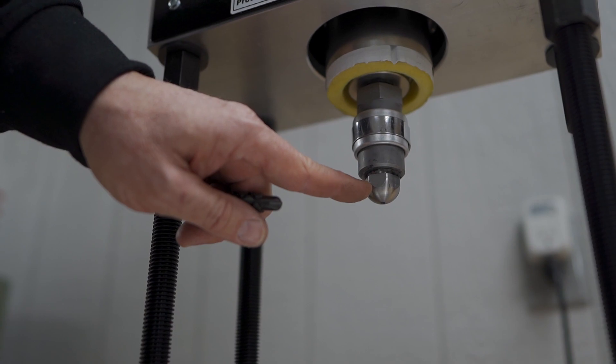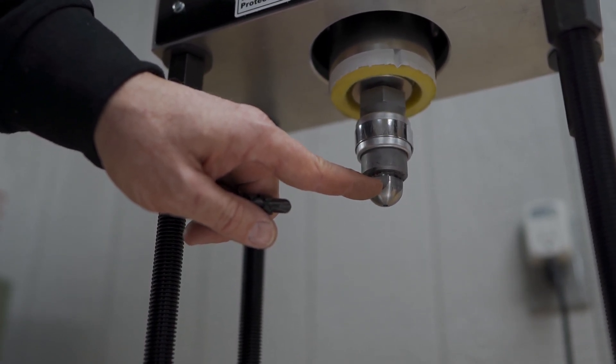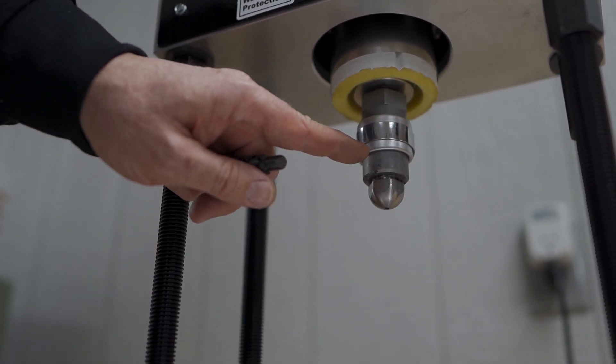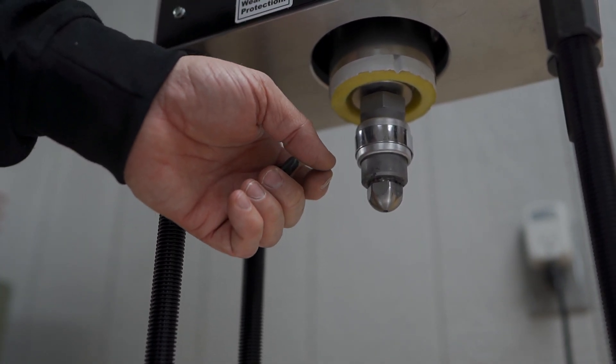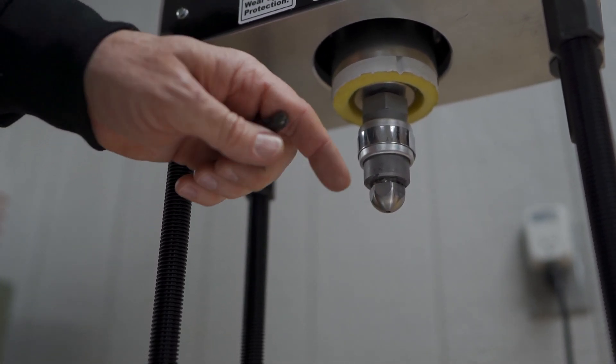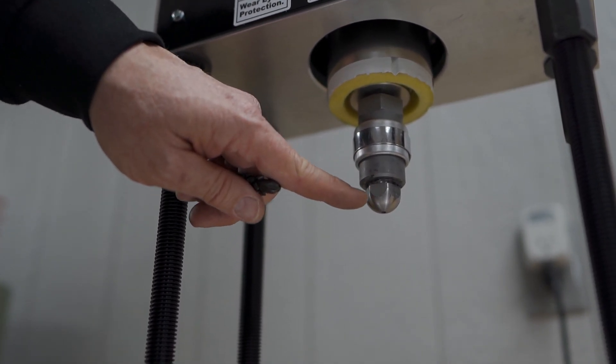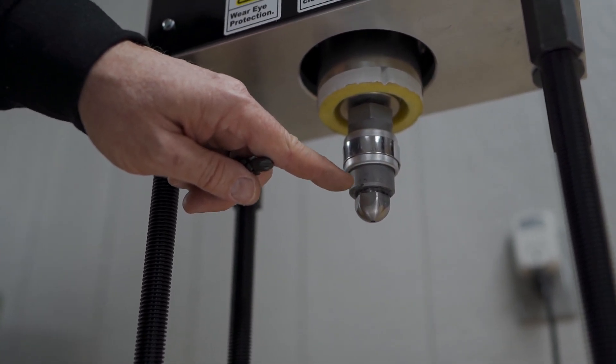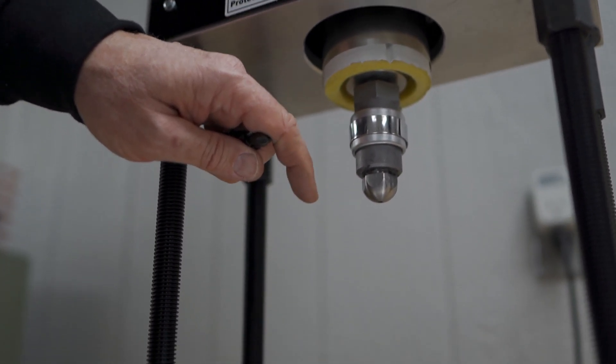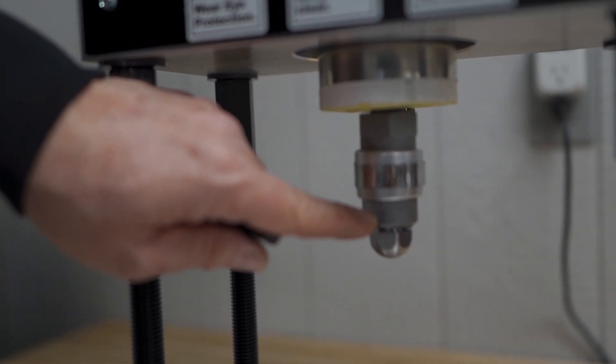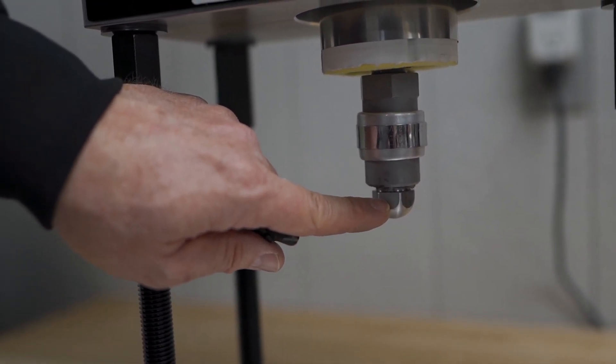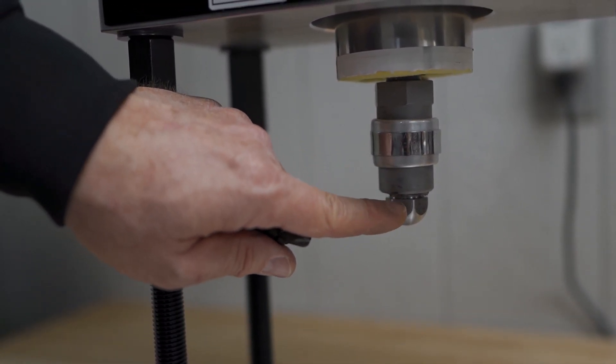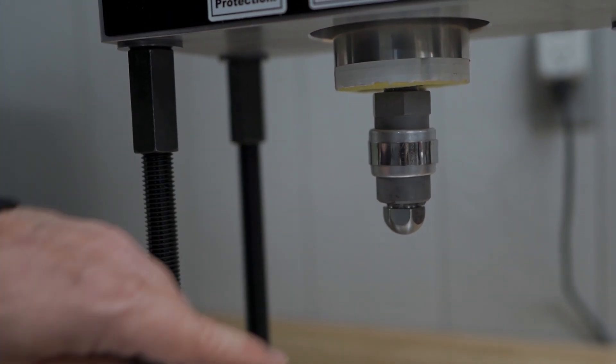And never put a cold nozzle tip into a hot nozzle body. Either put in same temperature or wait till everything has cooled down and then put a cold nozzle tip into a cold nozzle body. And the reason is, if you don't, the nozzle body will cool and shrink, the tip will expand, and you'll end up with an interference fit and you won't be able to get the tip out later.